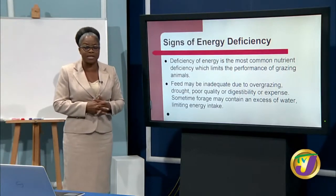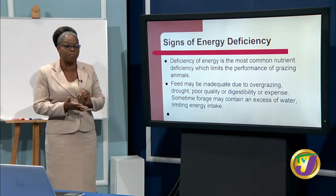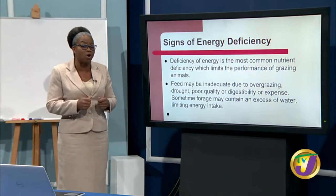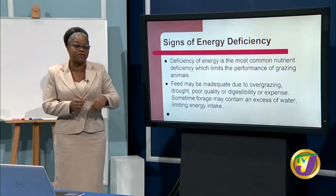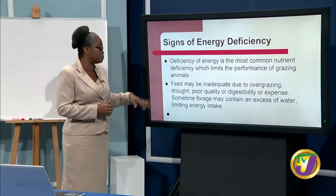Energy is very important in an animal's diet. If energy is not there, the animals will show signs of deficiency because energy is essential for growth. If energy is lacking, animals become malnourished — especially grazing animals that cannot get enough energy from pasture grass. This can happen due to overgrazing, drought producing poor-quality grass, or forage containing excess water that limits energy intake, causing the animal to suffer from malnutrition.